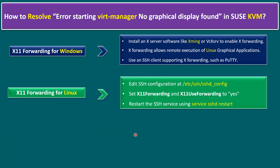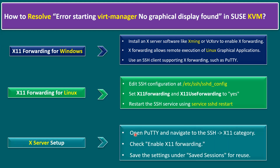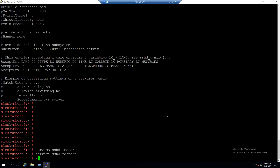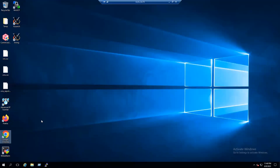The final step is enabling X11 forwarding at the PuTTY level, and this step is common for both Windows and Linux scenarios. In PuTTY, navigate to Connection > SSH > X11 and enable the X11 forwarding option, then save the setting. After that, you can start using the 'virt-manager' command and the error will be resolved. Let me exit and relaunch the SSH session to demonstrate.